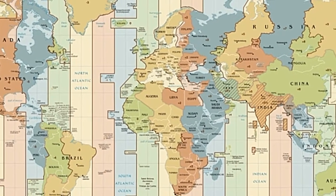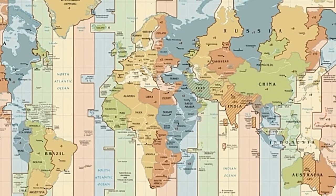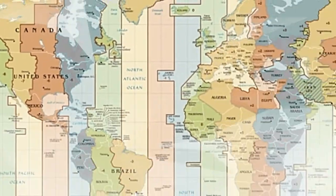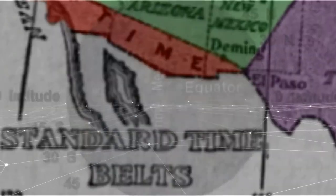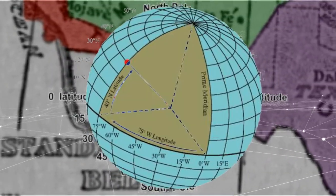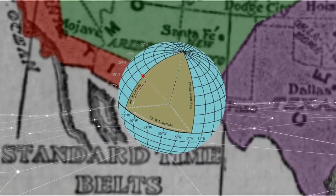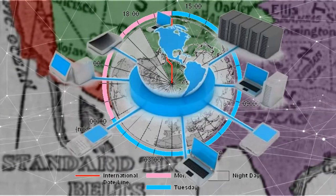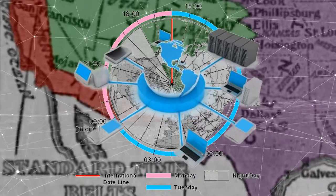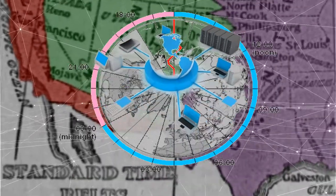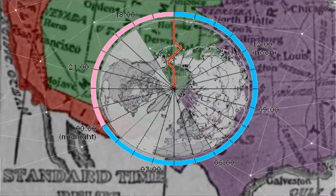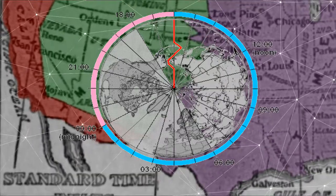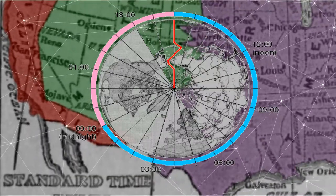Four standard time zones for the continental United States were therefore introduced on the 18th of November 1883. Britain at that time had already adopted its own standard time system for England, Scotland, and Wales, and so they helped gather international consensus for global time zones in 1884.